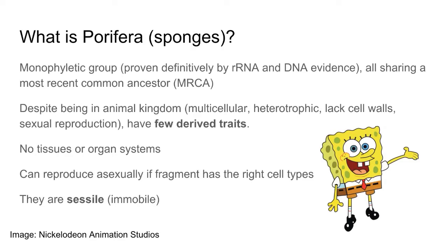Sponges or Porifera are a monophyletic group, meaning that they share a most recent common ancestor, commonly abbreviated MRCA. We know this from RNA and DNA evidence — by sequencing the genomes of sponge cells, looking at the nucleus and the DNA itself, as well as the rRNA, the ribosomal RNA that makes up the ribosomes of these sponge cells, we see enough commonalities to justifiably say they must share a most recent common ancestor.